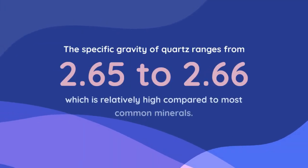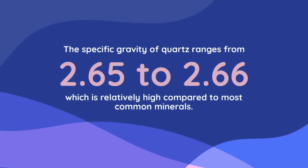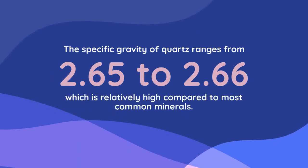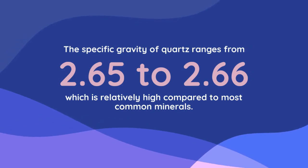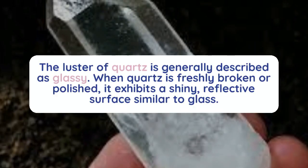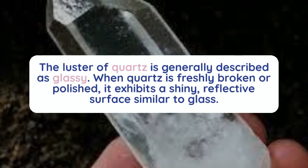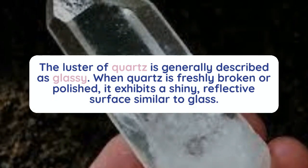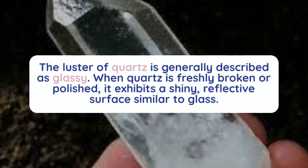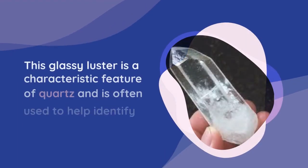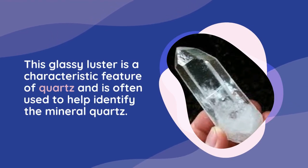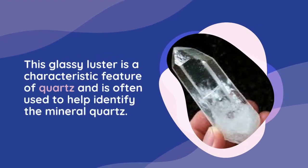Specific Gravity: The specific gravity of quartz ranges from 2.65 to 2.66, which is relatively high compared to most common minerals. Luster: The luster of quartz is generally described as glassy. When quartz is freshly broken or polished, it exhibits a shiny, reflective surface similar to glass. This glassy luster is a characteristic feature used to help identify quartz.